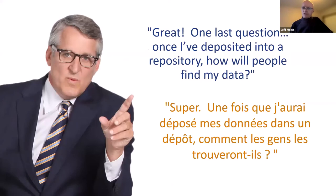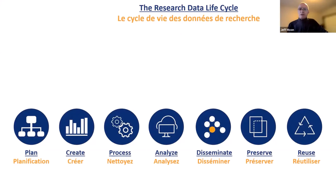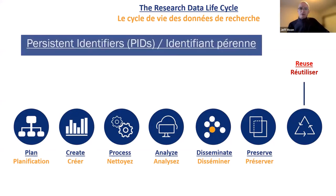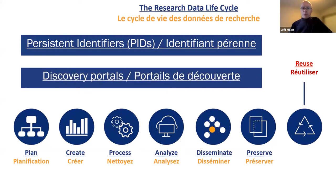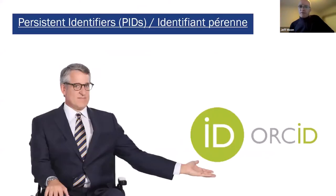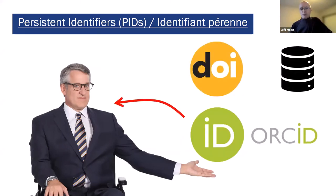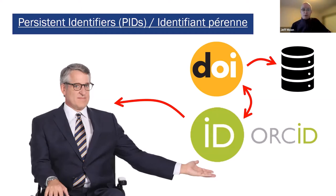Putting data into a repository is just one half of it — the other half is discovery and access. In order to help people discover data, we have to think about reuse. The Alliance RDM is supporting two kinds of persistent identifiers: ORCID IDs, which identify researchers, and DOIs or digital object identifiers, which uniquely and unambiguously identify datasets. These two are linked together in an ecosystem of persistent identifiers to permit better and more ubiquitous access to data.